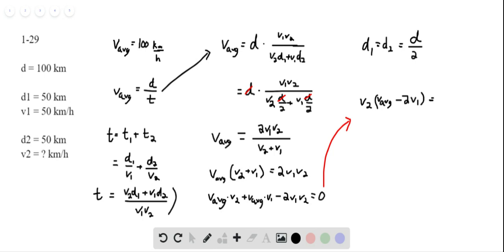That equals negative V average times V1. V2 equals, dividing both sides by my bracket term, V average times V1 over V average minus 2 V1. If I reorganize this denominator to be 2 V1 minus V average, the negative sign goes away.